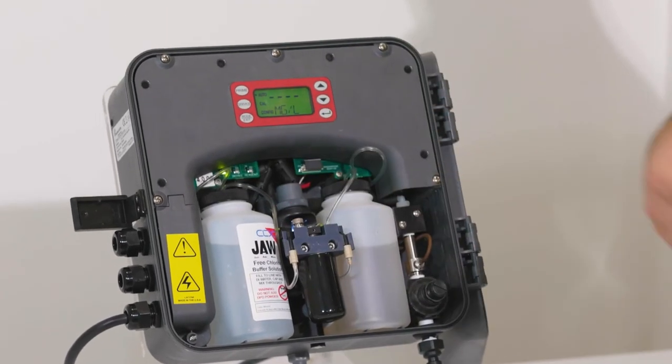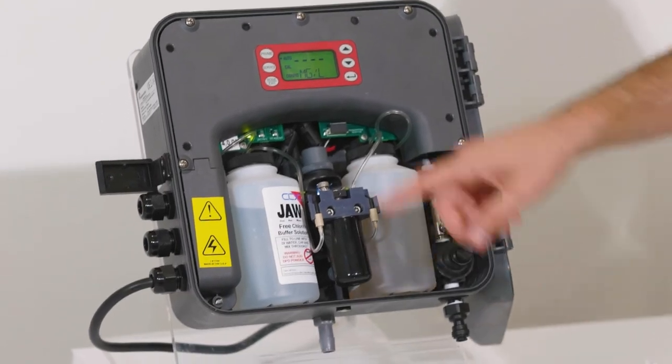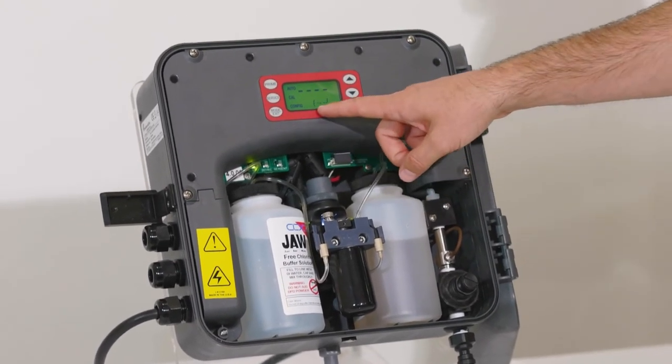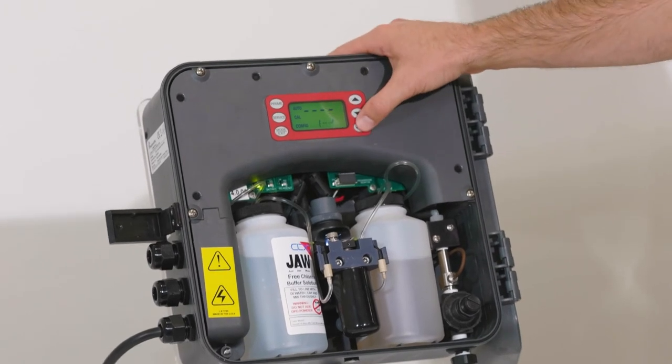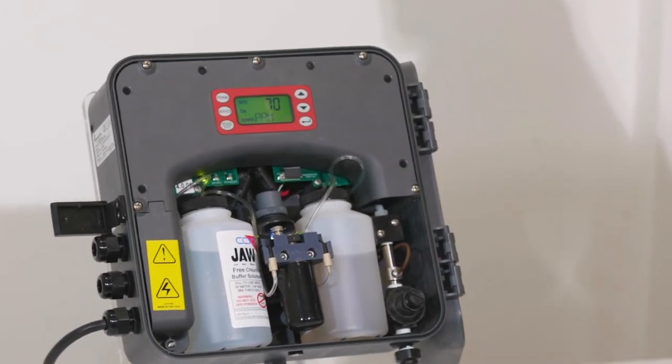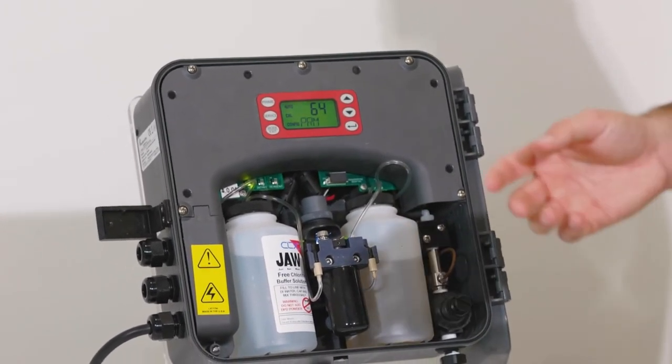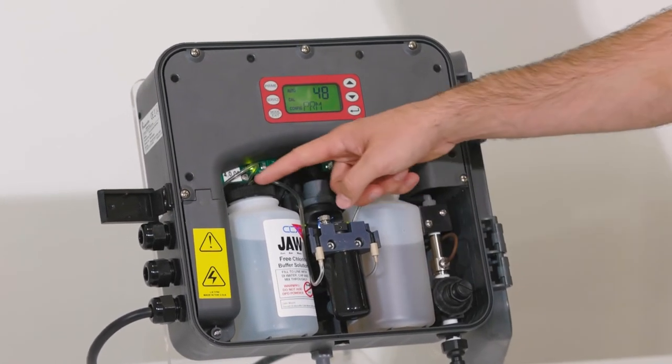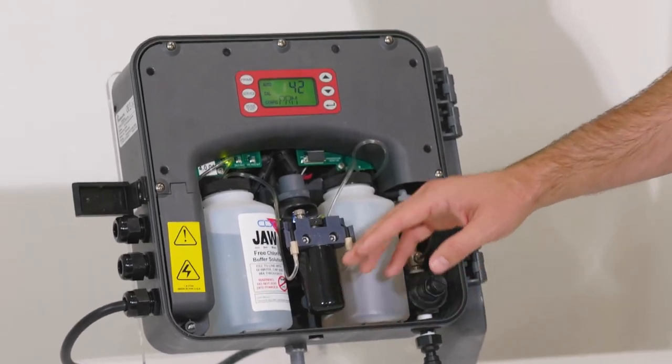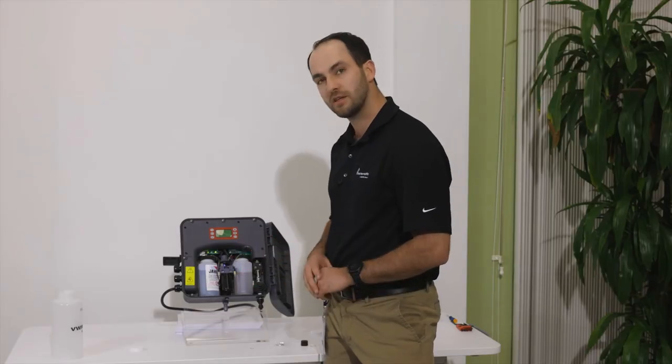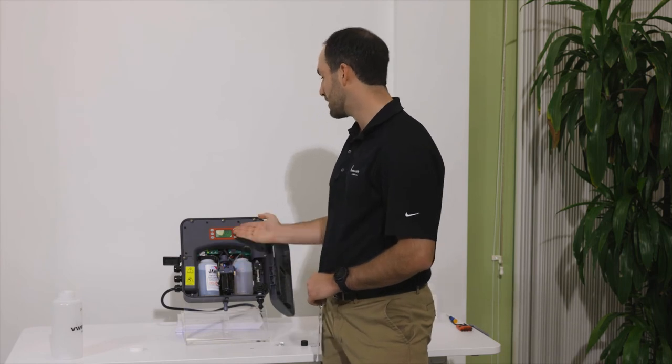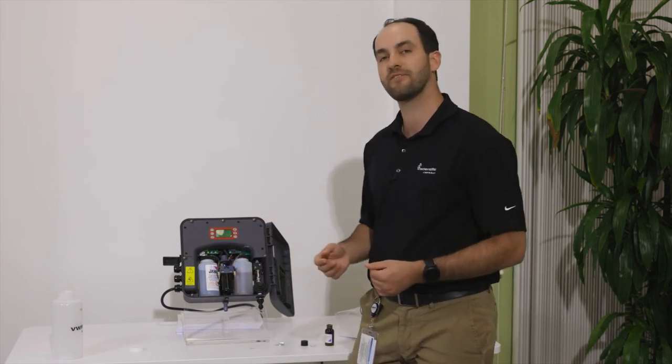Once you have the new reagents in, we need to prime the new reagent lines. So we'll hit prime, upper left corner. It will prompt us to hit the enter button. So we'll hit the enter button. And that will prime the pump 75 times. While the pump is priming, what we want to look for is we want to make sure that we see air bubbles coming through these lines here. We want to make sure that we see reagent being pushed into the optical block there. And you'll see that reagent moving through the reagent pump will pump 75 times.